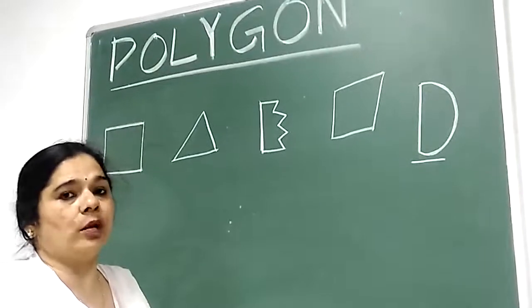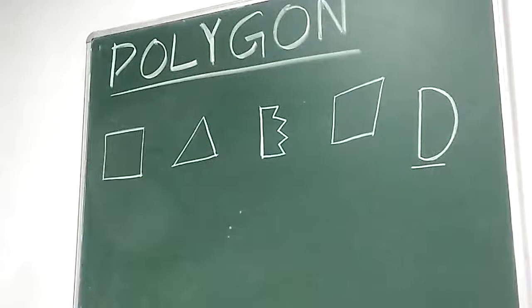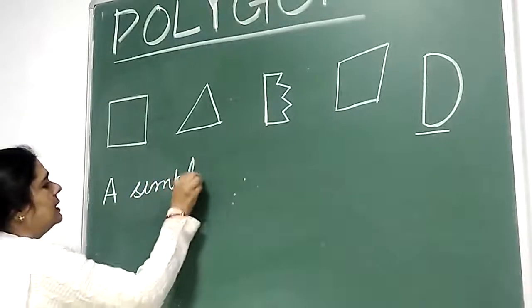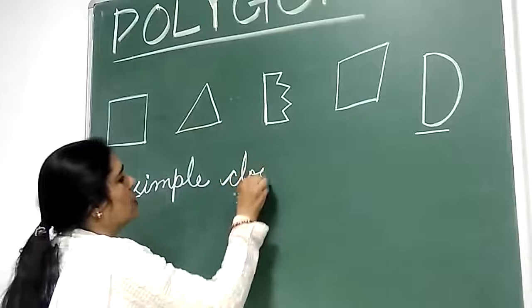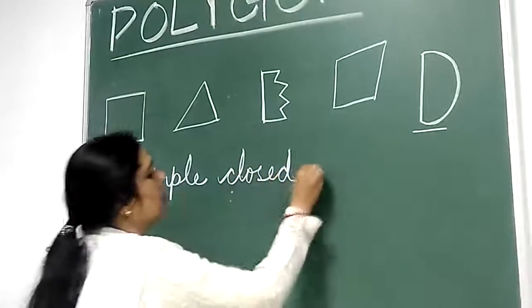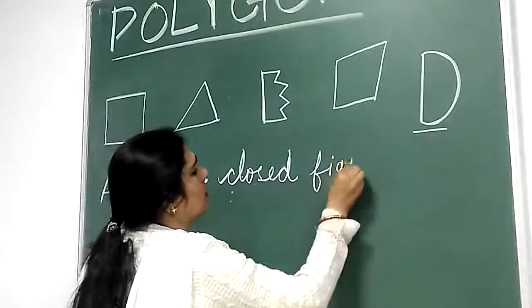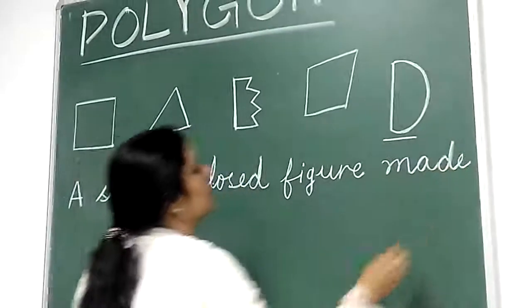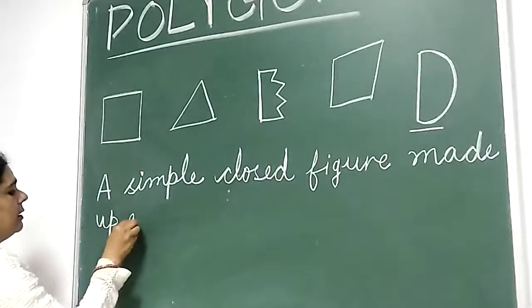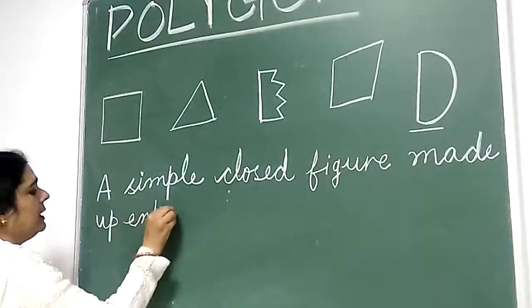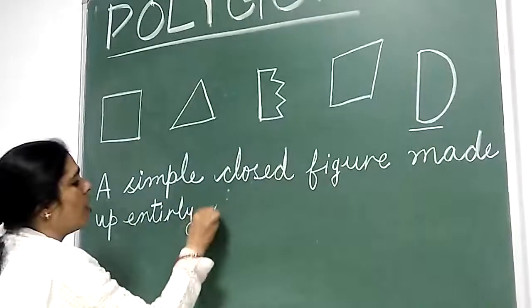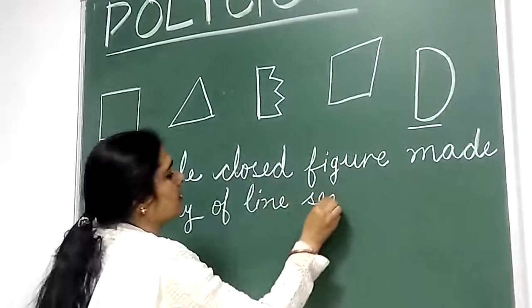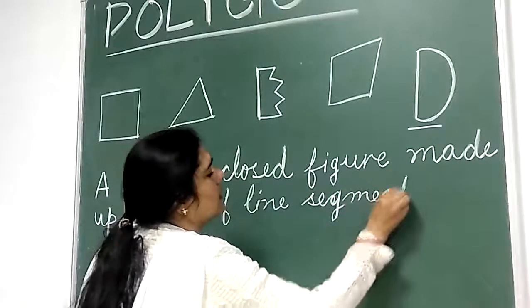Now, what is a polygon? A polygon is a simple, closed figure made up entirely of line segments.